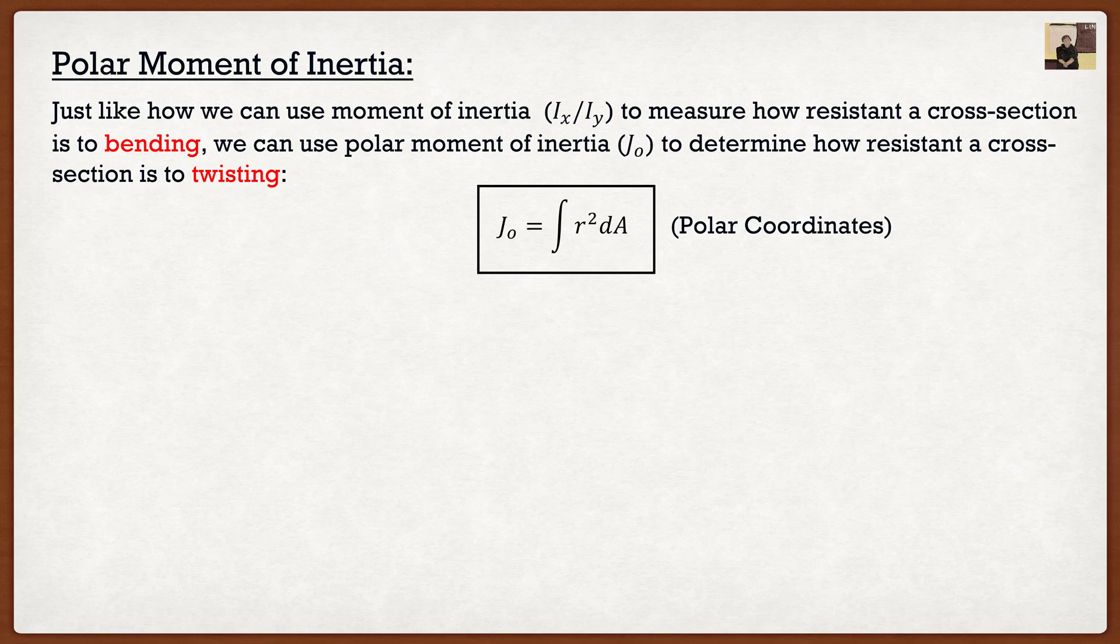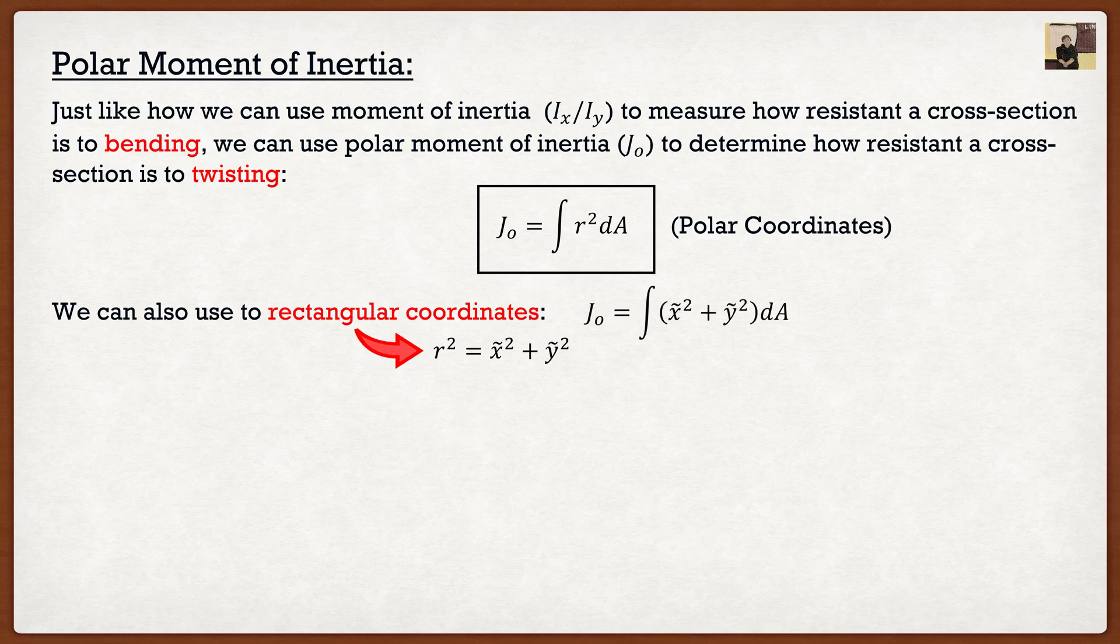Now if we want to, you guys are saying, Clayton, I've taken math, I'm not dealing with polar coordinates. Well, we can also express it in rectangular coordinates because we know that the radius squared is equal to x squared plus y squared. It's basically just a triangle. And if this is the case, we can actually substitute this into our formula above.